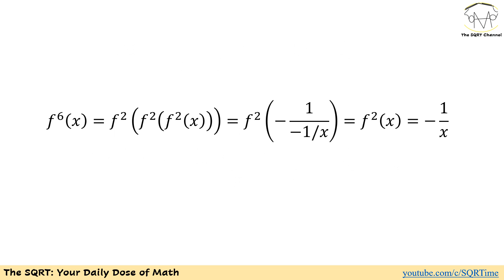Now we need to find f₆(x). You could start with f₂(x), then f₃(x), and so on, but there is a shortcut. The shortcut is to use f₂(x) applied three times to find f₆(x). For the first step, we apply f₂ to f₂(x): we have negative 1 over x, and replace x with f₂(x), giving negative 1 over (negative 1 over x), which is simply x.